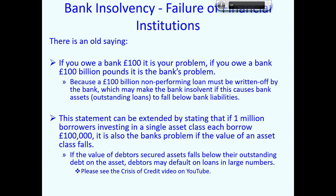This can be extended further: if the bank issues money to one million borrowers each investing in a single asset class, each borrowing £100,000, it is also the bank's problem if the value of that asset class falls. A significant fall in asset values may cause the value of debtors' secured assets to fall below their outstanding debt, giving debtors an economic incentive to default on their loans — and they may do so in large numbers. The American subprime loan crisis, which is very effectively explained in the 'Crisis of Credit' video on YouTube, is a key example of this.